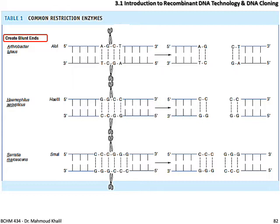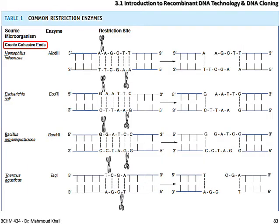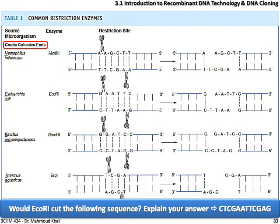These are common restriction enzymes used — you don't need to memorize this figure. There are three types of restriction sites which create blunt ends. In this figure you can see four types of restriction enzymes: ECO-R1, HEN3, BAMH1, and TAC1, which create cohesive or sticky ends. As an exercise: would ECO-R1 cut a given sequence? Check the ECO-R1 restriction site and compare to see if it will cut the sequence or not.